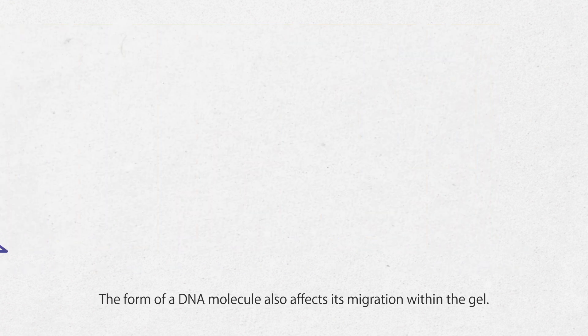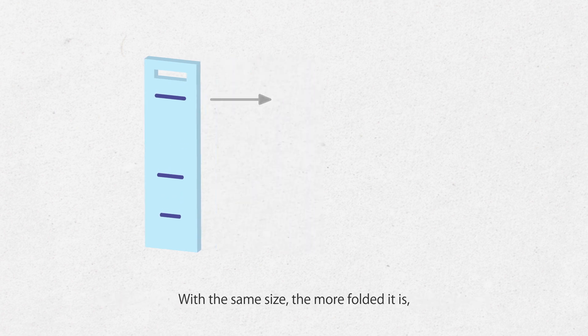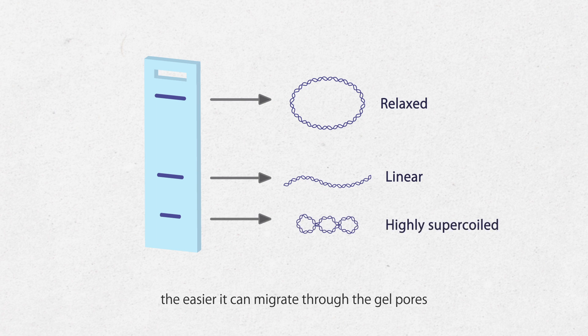The form of a DNA molecule also affects its migration within the gel. With the same size, the more folded it is, the easier it can migrate through the gel pores and thus travel faster through the gel.